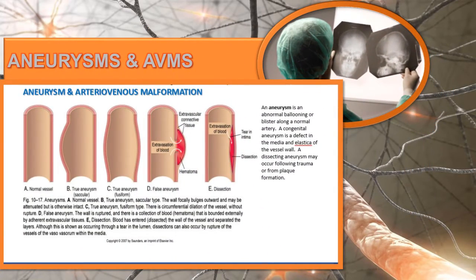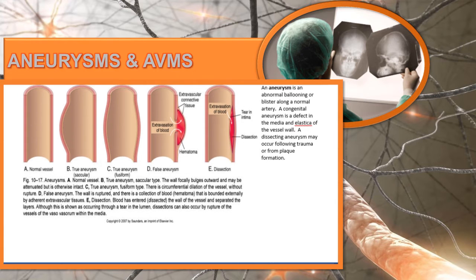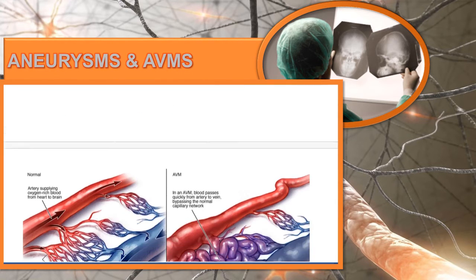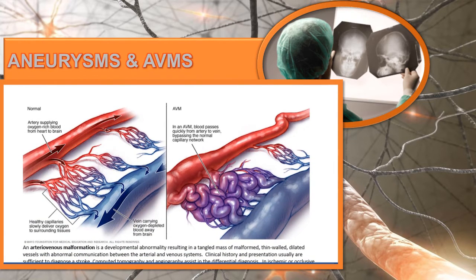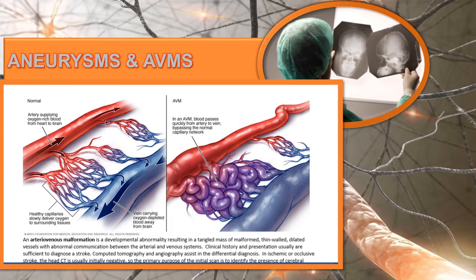An aneurysm is an abnormal ballooning or blistering along a normal artery. A congenital aneurysm is a defect in the media and elastica of the vessel wall. A dissecting aneurysm may occur following trauma or from plaque formation, as illustrated in the picture. Arteriovenous malformations, or AVMs, are developmentally abnormal, tangled masses of malformed, thin-walled, dilated vessels with abnormal communication between the arterial and venous systems. Clinical history and presentation are usually sufficient to diagnose an AVM.